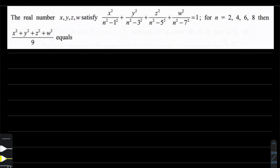The real numbers x, y, z, and w satisfy this equation: x²/(n²-1) + y²/(n²-3²) + z²/(n²-5²) + w²/(n²-7²) = 1 for n equal to 2, 4, 6, and 8. Then x² + y² + z² + w² divided by 9 equals what?